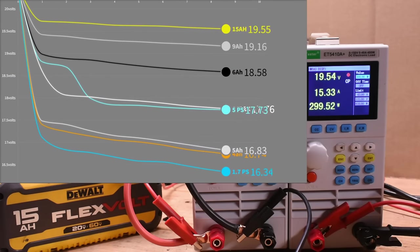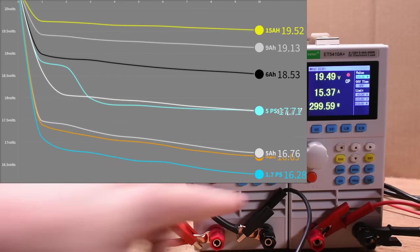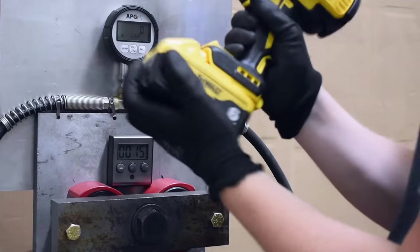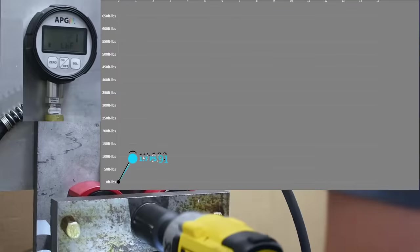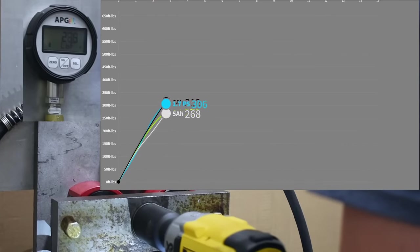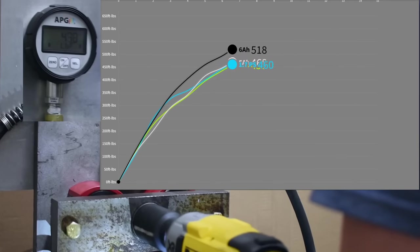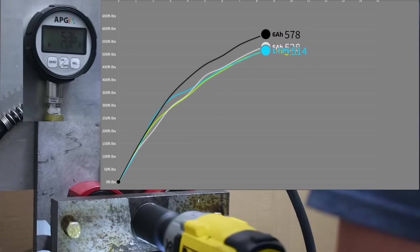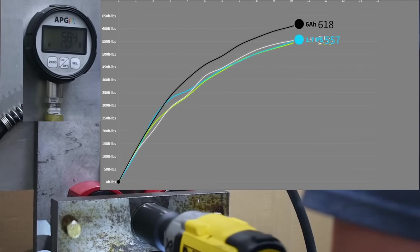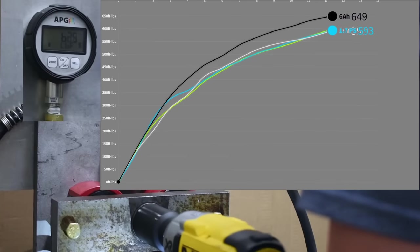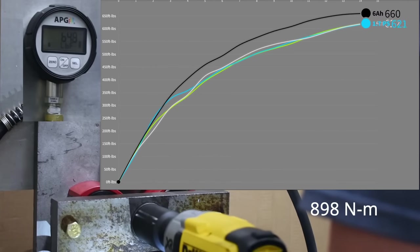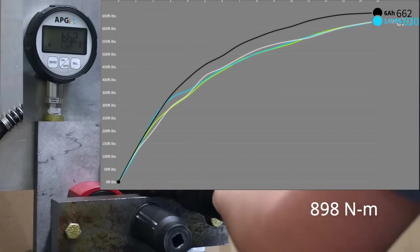So we're going to head over to the dyno and visit our old friend, the DCF 899 high torque. Still being sold today, it was designed before high performance batteries really existed, yet benefits from them quite a lot, as shown here with the 1.7 Power Stack matching the 4 amp hour and 5 amp hour XR batteries closely, with the 6 amp hour XR just killing it on the curve. Here's the new 5 amp hour Power Stack.